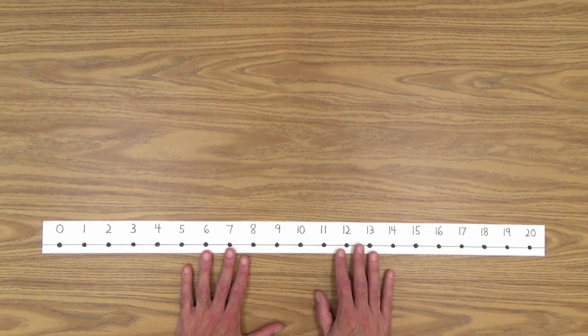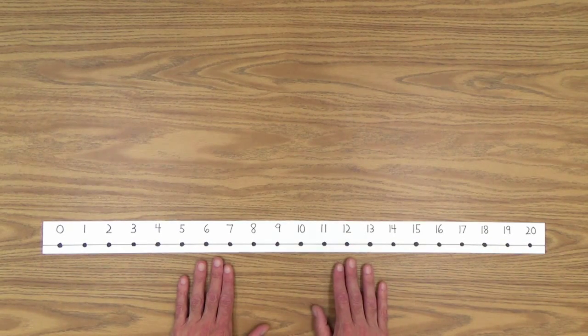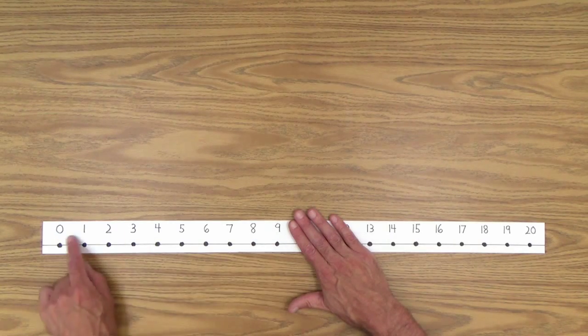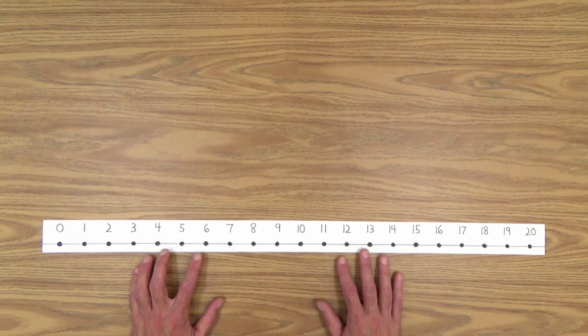So that explanation will have to suffice for right now. So one digit numbers, two digit numbers. Okay.